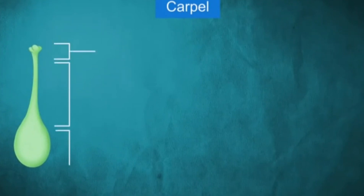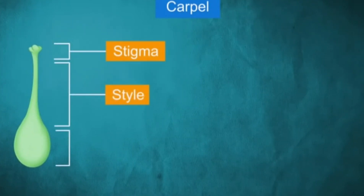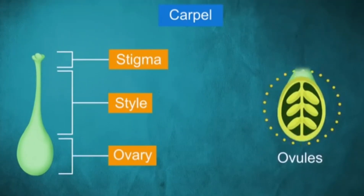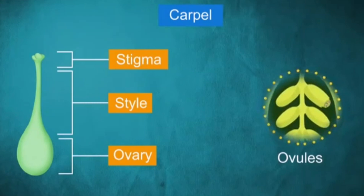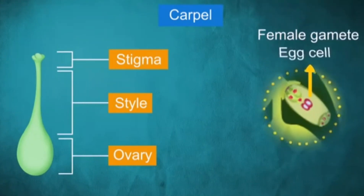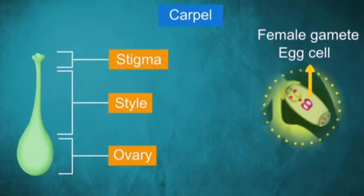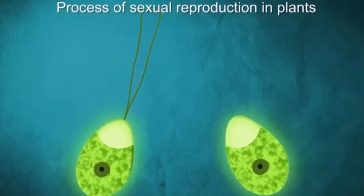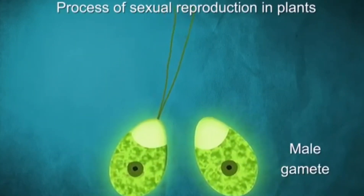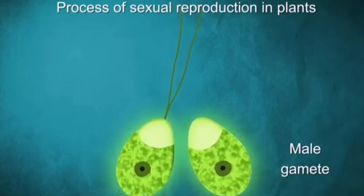The carpel is made up of three parts: the stigma, the style — which is the middle elongated section — and the swollen bottom section which is called the ovary. Inside the ovary we have what are called ovules, and these ovules contain the female gametes, which we call the egg cells. This is very much similar to how we have male and female sex cells within us as human beings.